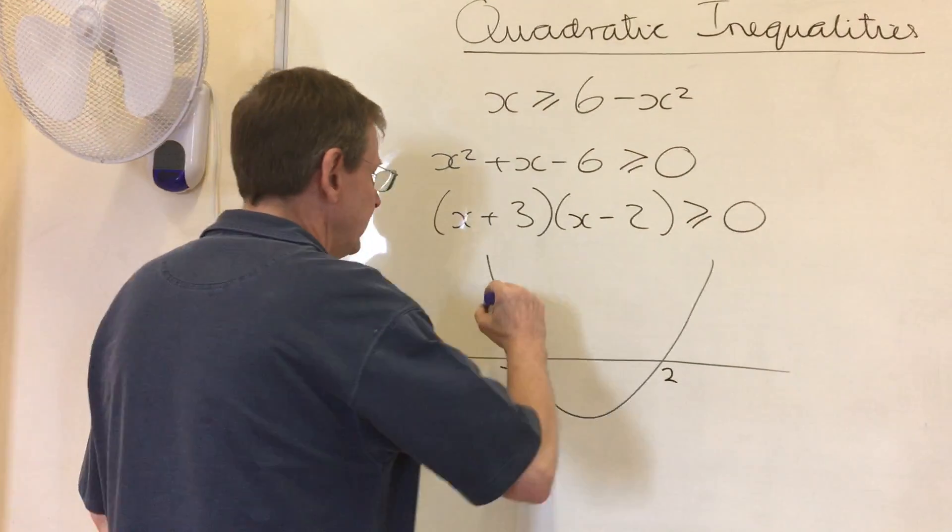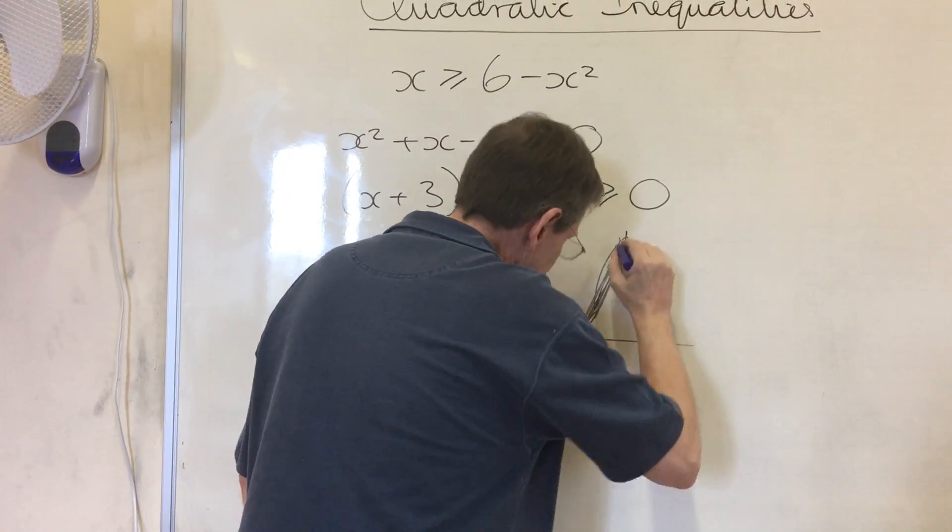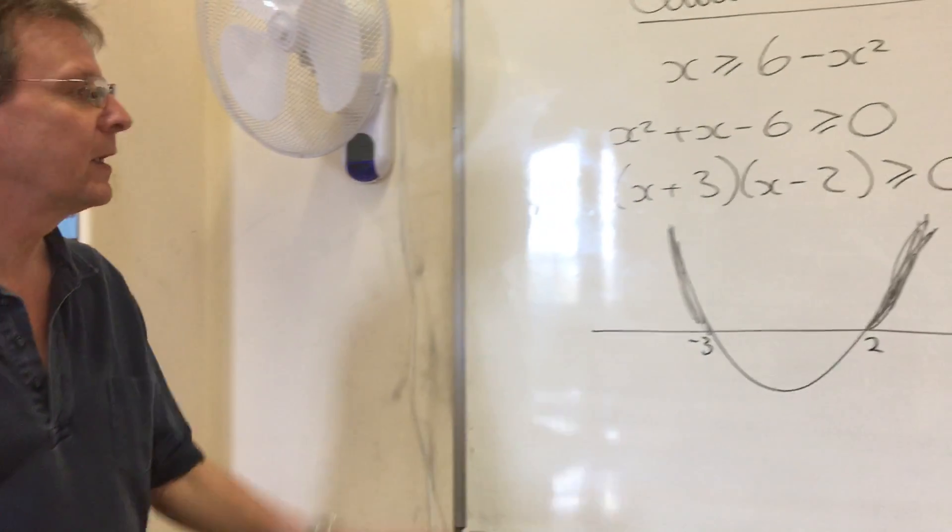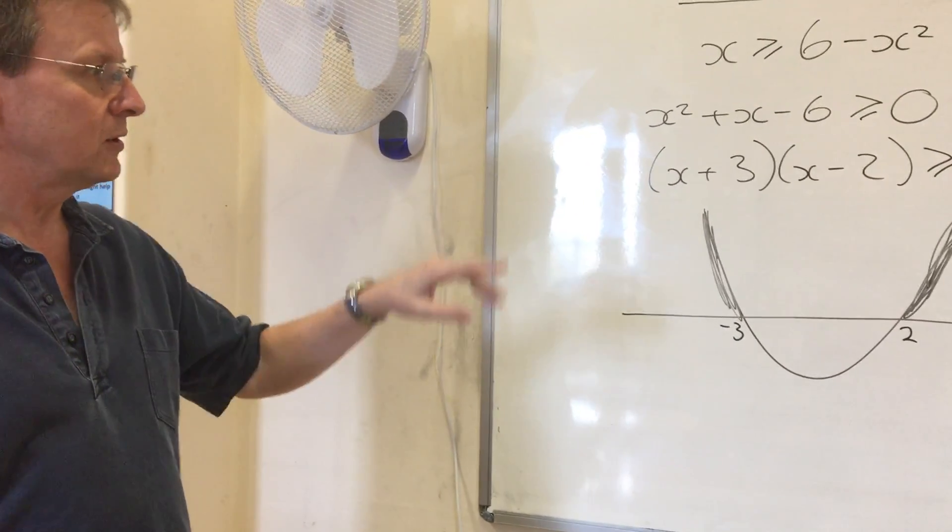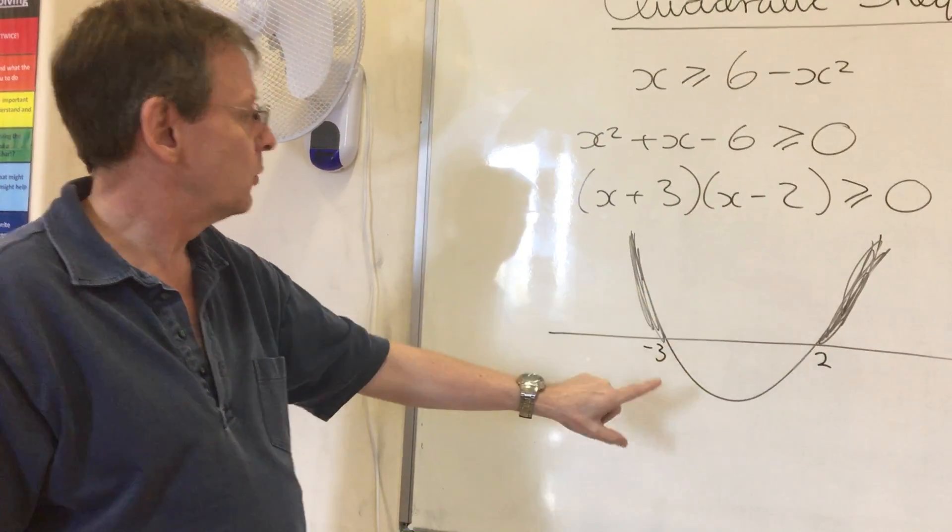So we're looking at this bit of the graph and that bit of the graph. But what we want is not what the y-value is. We want the x-values for those two bits. Well, clearly, the x-values here are going to be the ones less than negative 3.